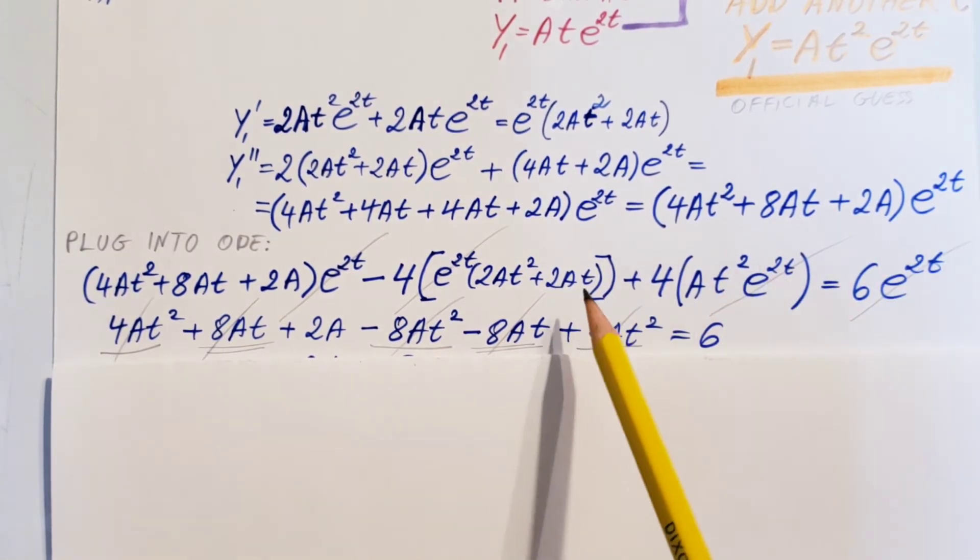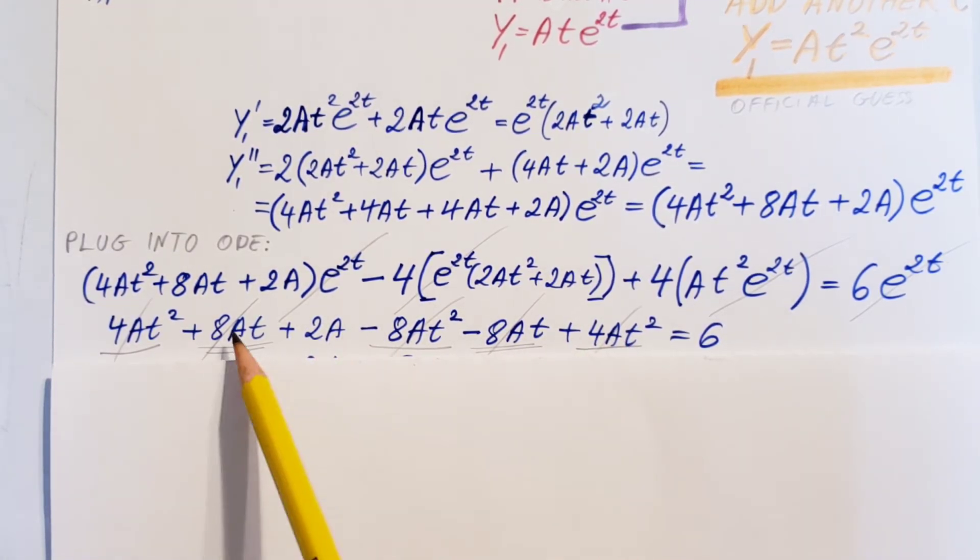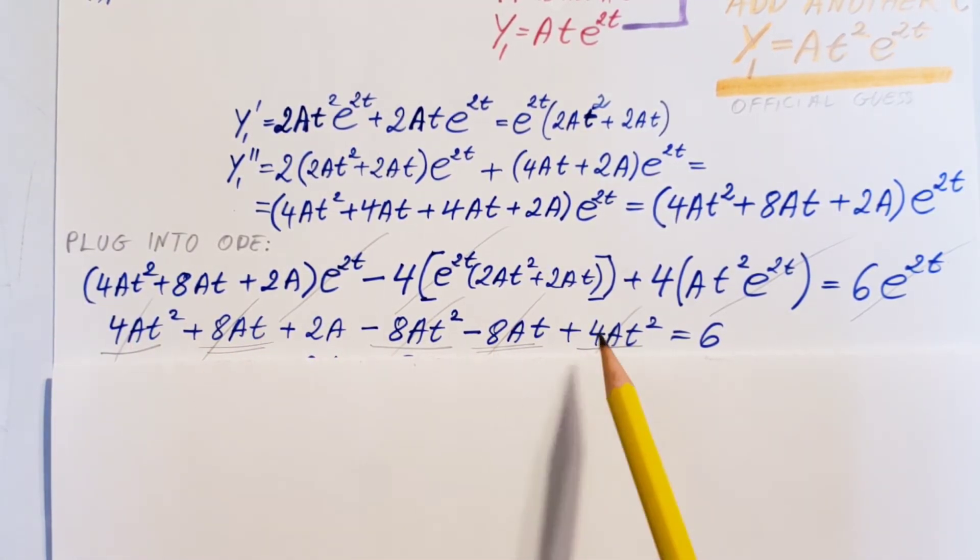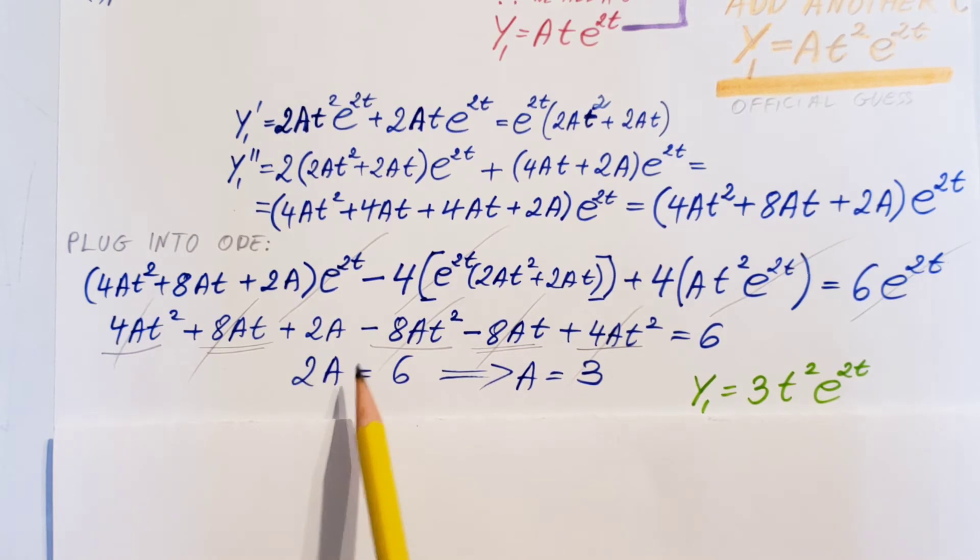Simplify all the e to the 2t's out, because every single term has it, left and right hand side, so we can simply cancel it. We're gonna get this. We can collect like terms, and cancel out stuff again. And we're able to see that 2A equals 6. From here, A equals 3.